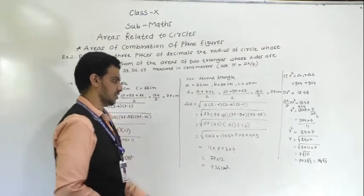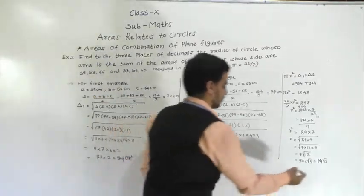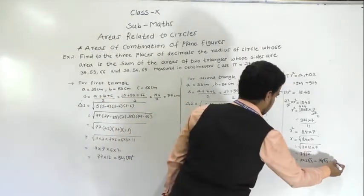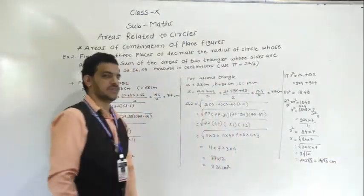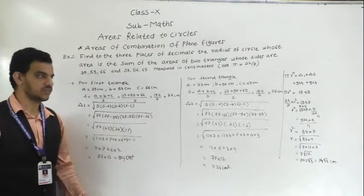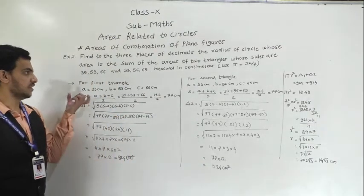So r = 14√3. To find the answer to three decimal places, substitute the value of √3 and multiply by 14.